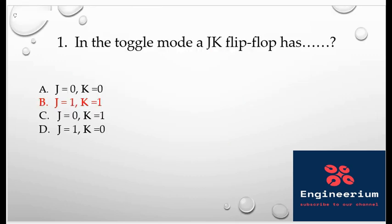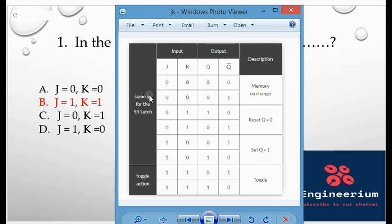The first one is in the toggle mode JK flip-flop has. So here we have to understand the mode of the MCQs which is asking about JK flip-flop, not all flip-flops. We must have known the JK flip-flop and its two stable states. You can see here written same is for the SR. So SR and JK flip-flop are almost the same, yes. And JK flip-flop is basically a gated SR flip-flop with the addition of a clock input circuit.